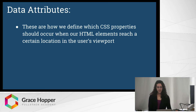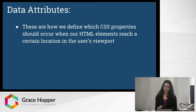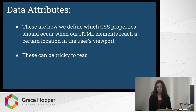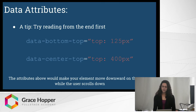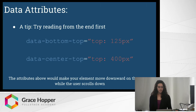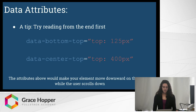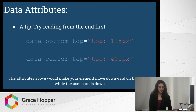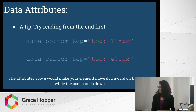With data attributes in our HTML, we basically define a space in the viewport where we want a certain CSS property to occur. They can be really difficult to read — it took me a while to understand them, but I have a tip. I like to read starting from the end of the attribute first. For example, if we have the data attribute 'data-bottom-top', I would say: when the top of my element reaches the bottom of the user's viewport, I want this CSS property to occur. As a second example, with 'data-center-top': when the top of our element reaches the center of the viewport, we want this CSS property to occur.